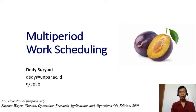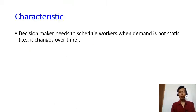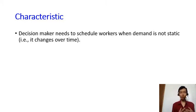We have seen in the previous video how we can model a multi-period inventory model. Now here it is very similar — the only difference is that instead of inventory we are going to talk about a work scheduling problem. The multi-period case always involves something that changes over time. Here a decision maker needs to schedule workers when the demand is not static; in other words, the demand for workers changes over time.